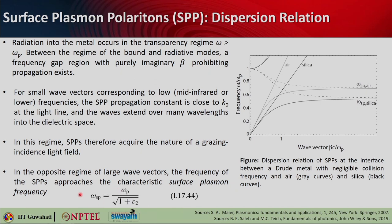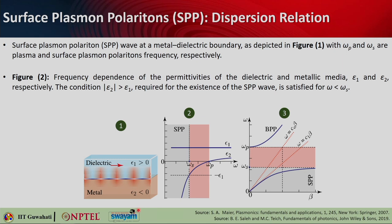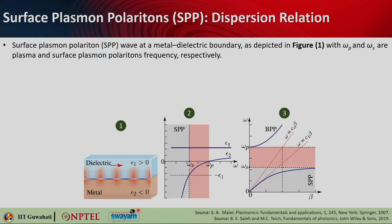Looking at the surface plasmon polariton wave at a metal-dielectric boundary: the field propagates along the boundary with alternating high-low charge density, extending more into the dielectric region and less into the metal. The permittivity plot shows ε₁ positive for the dielectric, ε₂ negative for the metal (from the Drude model: ε₂ = 1 − ωₚ²/ω²). At ω = ωₛ, ε₂ = −ε₁ giving the resonance condition. SPPs exist for ω < ωₛ.